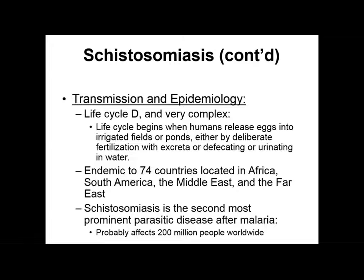The transmission cycle of this pathogen is quite complex. It begins when eggs are released into irrigated fields or ponds — sometimes accidentally, sometimes deliberately through use of human excrement as fertilizer. This pathogen is endemic to 74 countries, most of which are in Africa, South America, the Middle East, and the Far East. Schistosomiasis is the second most prominent parasitic disease after malaria, and still affects approximately 200 million people worldwide.